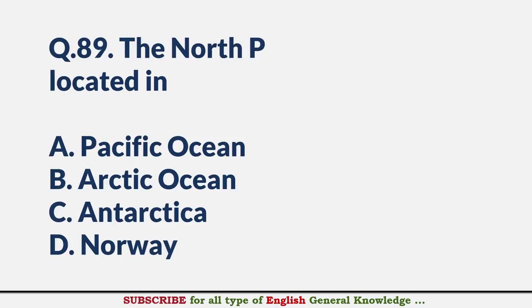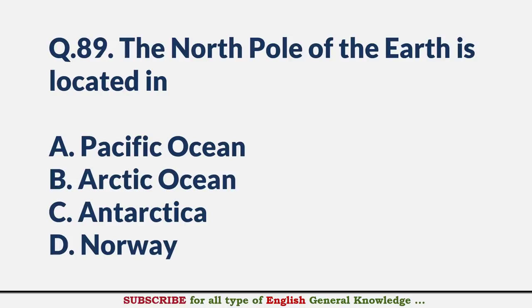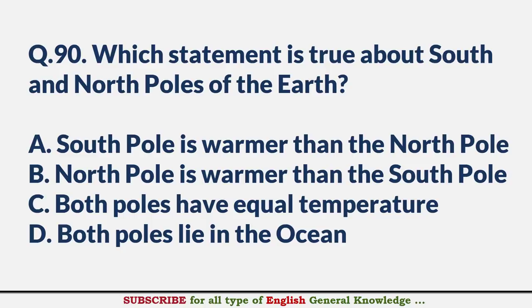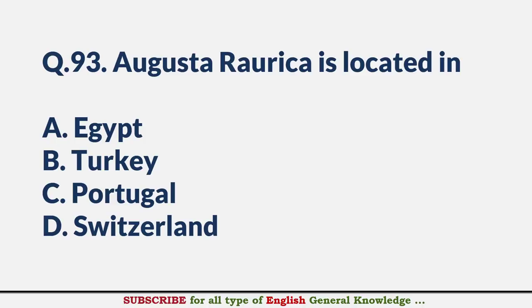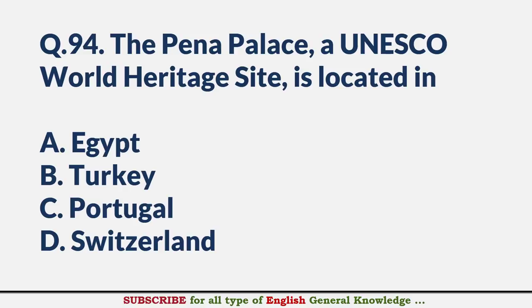The North Pole of the earth is located in — Answer B: Arctic Ocean. Which statement is true about the South and North Poles? — Answer B: North Pole is warmer than South Pole. Sinai Peninsula is located in — Answer D: Egypt. Augusta Raurica is located in — Answer D: Switzerland. The Pena Palace, a UNESCO World Heritage Site, is located in — Answer C: Portugal.